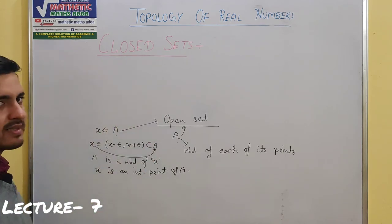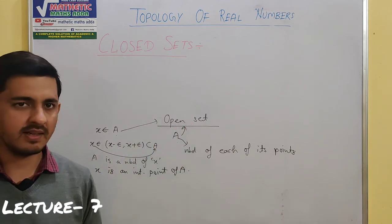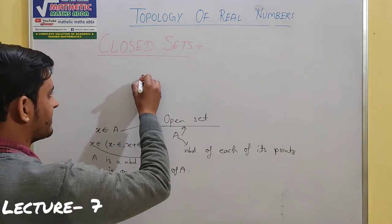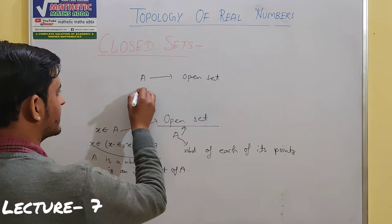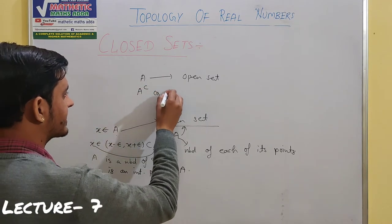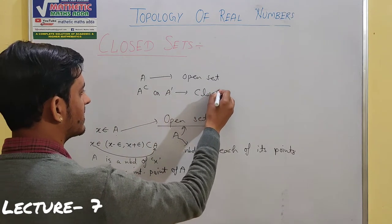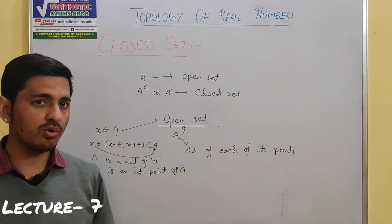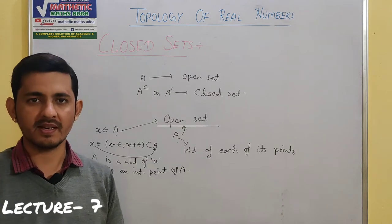Now, Closed Sets — the definition that is formed is automatically based on Open Sets. So we need to focus more on Open Sets. If any Set A is an Open Set, then its complement — also represented as A' — what will we call that complement? A Closed Set. So whether a set is closed or not depends on whether its complement is open.